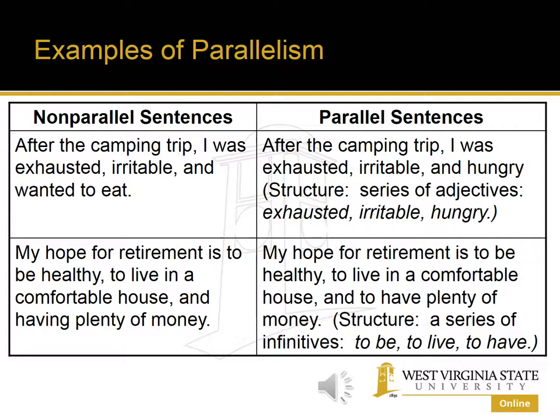Another example: 'After the camping trip, I was exhausted, irritable, and wanted to eat.' The structure is subject plus 'was' followed by adjectives. 'I was exhausted, I was irritable' works, but 'I was wanted to eat' makes no sense. The fix is easy — change 'wanted to eat' to an adjective: 'After the camping trip, I was exhausted, irritable, and hungry.' Now we have a series of adjectives: exhausted, irritable, hungry.